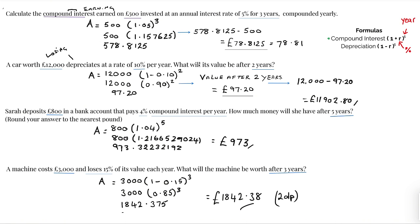So the value after two years is 97.20. It's asking you the value after two years, which is 12,000 minus 97.20 because we want to work out how much the car costs now after two years, which is 11,902.80.